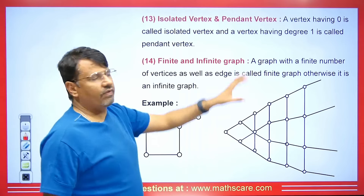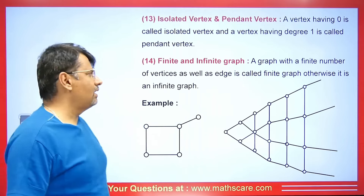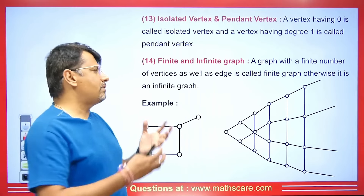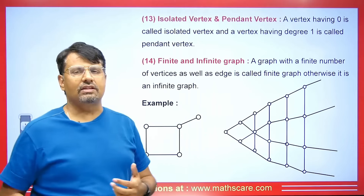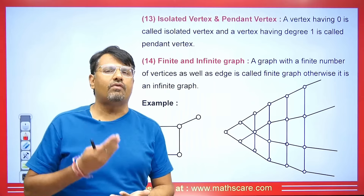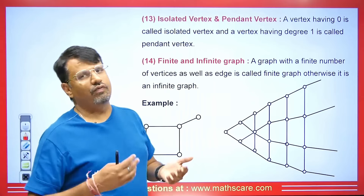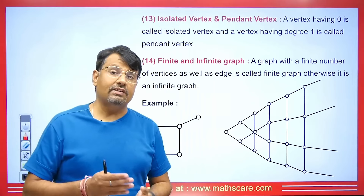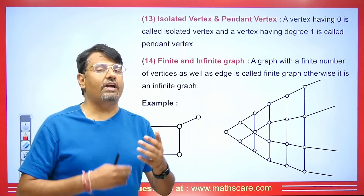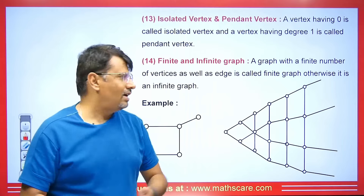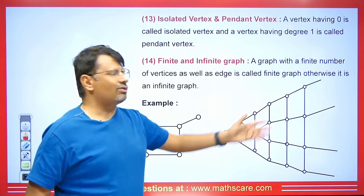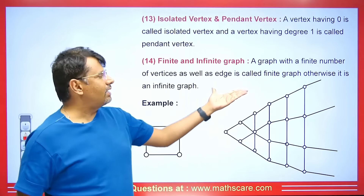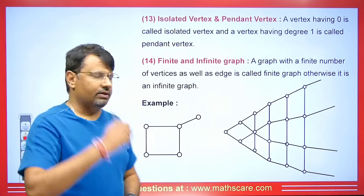Let's see what finite and infinite graphs are. If a graph has a finite number of vertices and edges, it is a finite graph. If there is a graph with an infinite number of edges and vertices, then it is an infinite graph.